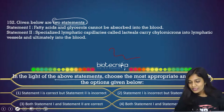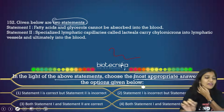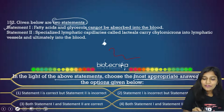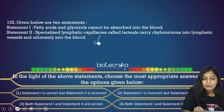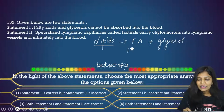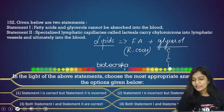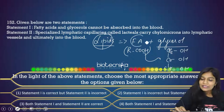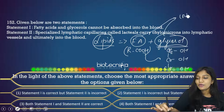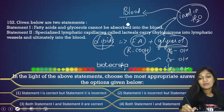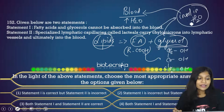Question 152: two statements given. Statement 1 says fatty acids and glycerol cannot be absorbed directly into the blood. Lipids are made up of fatty acids (R-COOH) and glycerol. Fatty acids and glycerol are insoluble in water, and since blood contains maximum water, they cannot be transported directly in blood. This statement is correct.